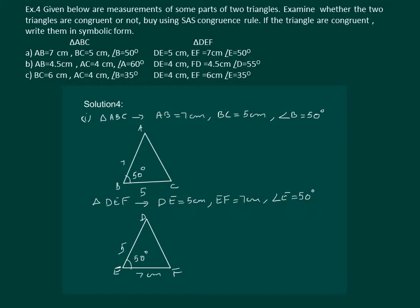Here we can see in the two triangles AB = EF = 7 cm, BC = DE = 5 cm, and angle B = angle E = 50°. This means the angles included between the equal sides are equal, and hence triangle ABC is congruent to triangle FED by SAS property.